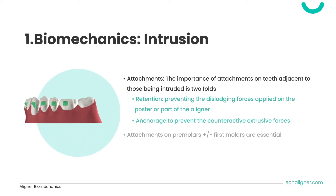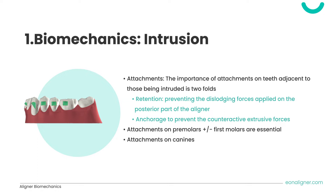The second consideration is attachments. The importance of attachments on teeth adjacent to those being intruded is two-fold: first, retention to prevent dislodging forces acting on the posterior teeth; and second, when intruding anterior teeth, a counteractive force will tend to extrude posterior teeth, so attachments provide anchorage to counteract these forces. Place attachments on premolars where the highest extrusive forces are applied, and also on first molars where forces may extend. Always add attachments on canines even when intruding them with the incisors, as incisors typically require more intrusion, meaning some extrusive forces tend to affect the canines.